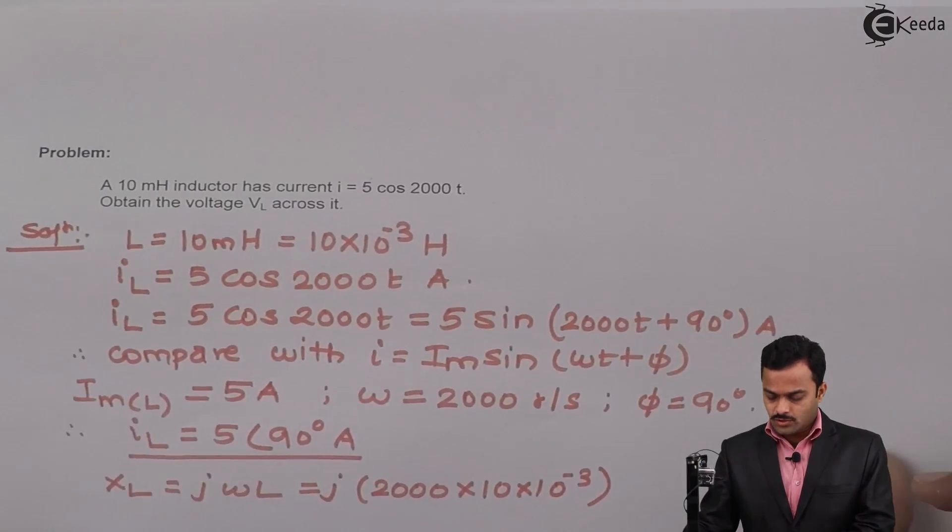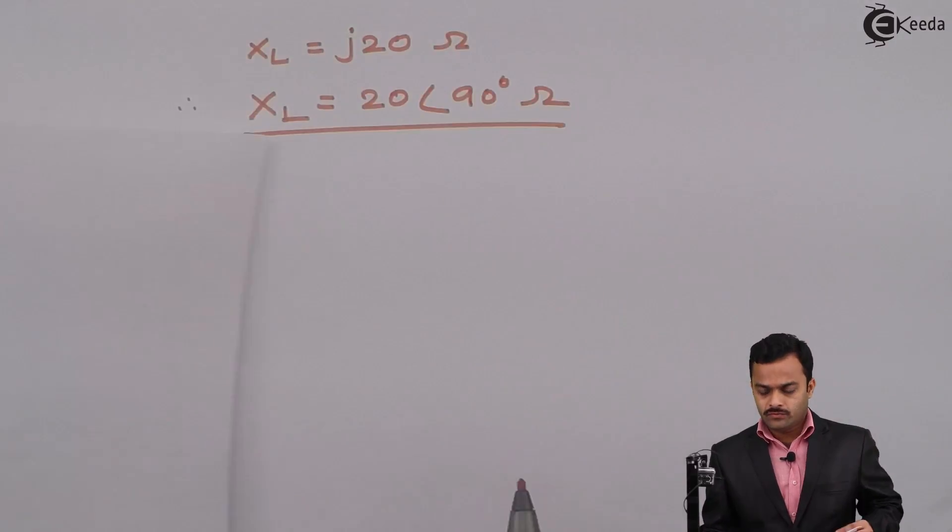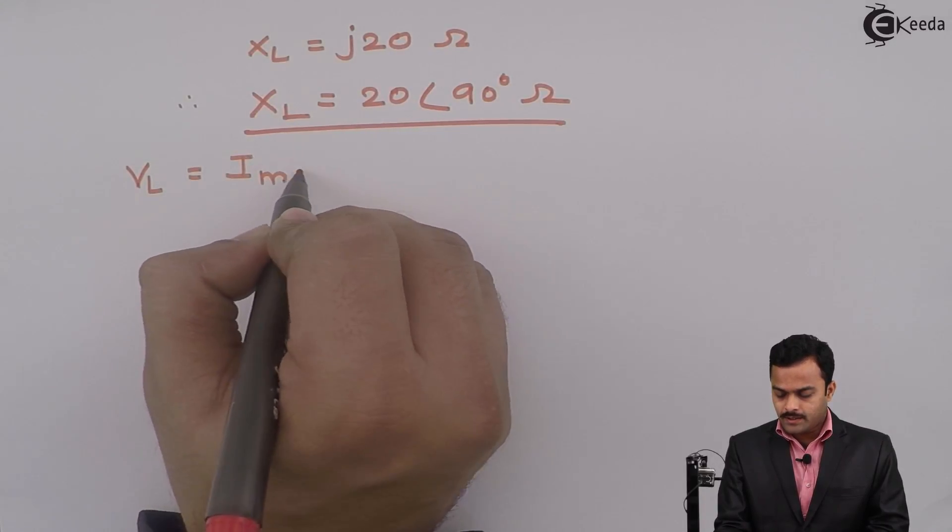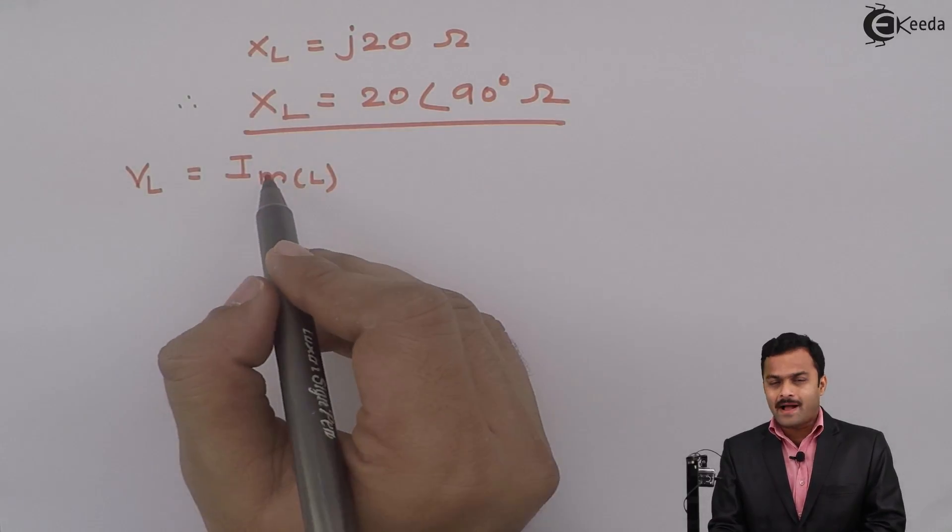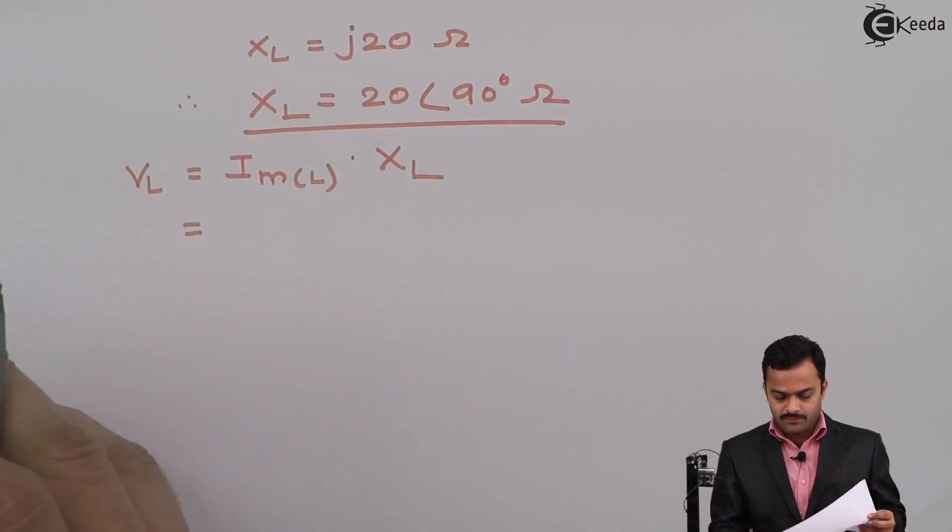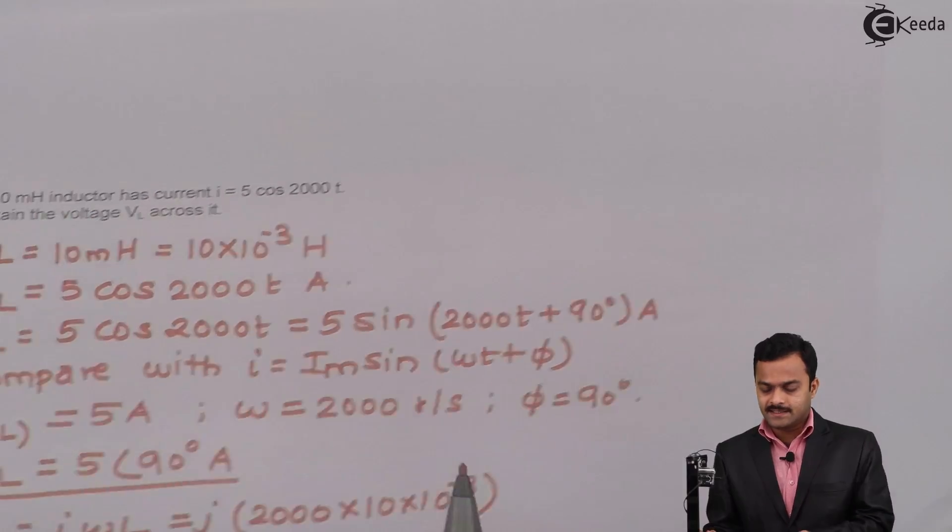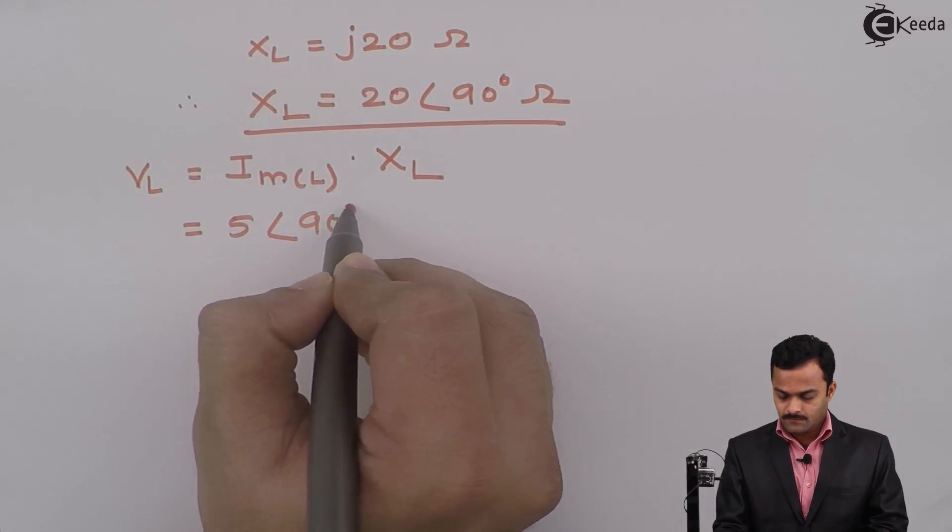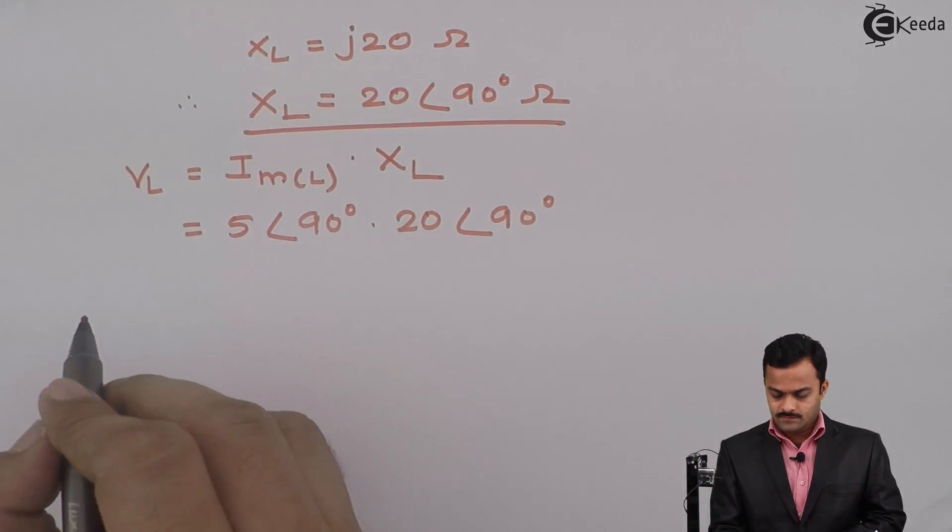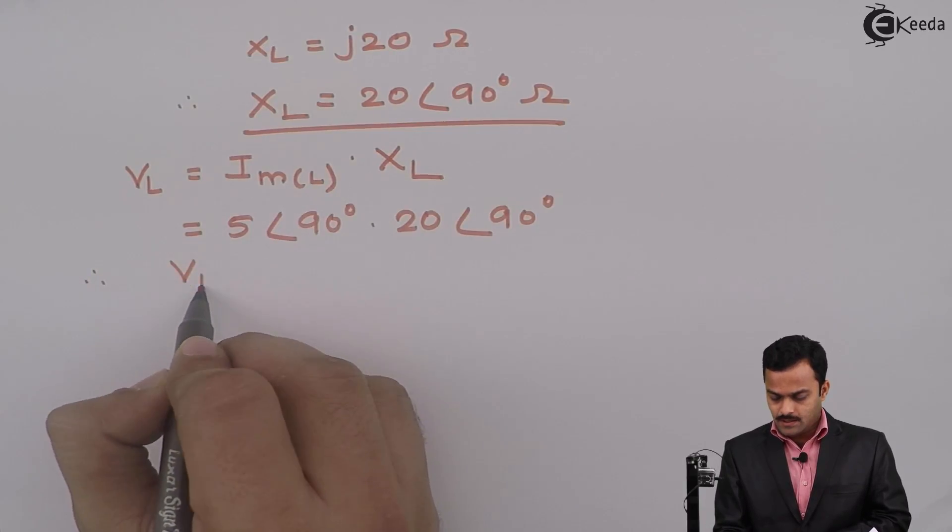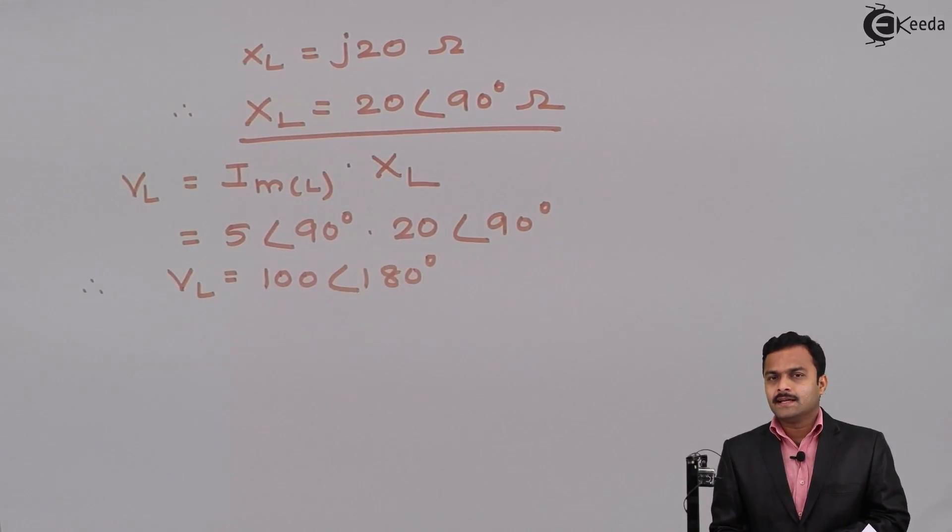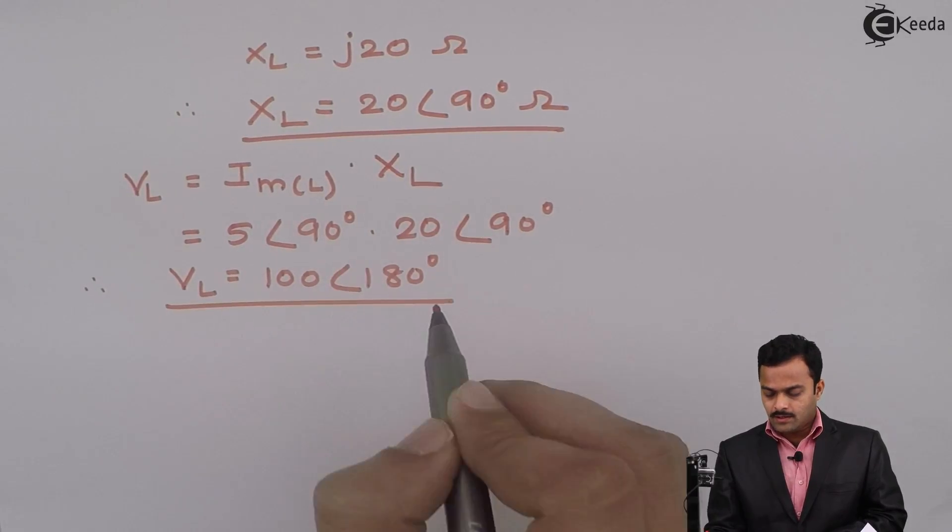Now X_L is known and I_L is known, I can get V_L. V_L is I_m multiplied by X_L, because I am considering the maximum value of current. So the maximum value of current is 5 at an angle 90 degrees, and X_L is 20 at an angle 90 degrees. If I solve, I will get V_L as 100 at an angle 180 degrees.